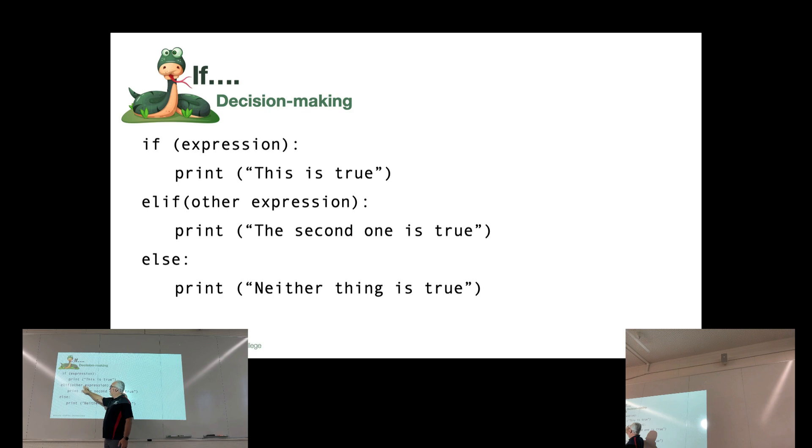If not, it will check this expression, the elif. If this is true, then this block will get executed. If that's not true in this statement, then it will go down and it will look for an else. Else says, if nothing else has been true, then do this thing.